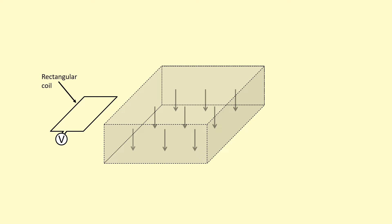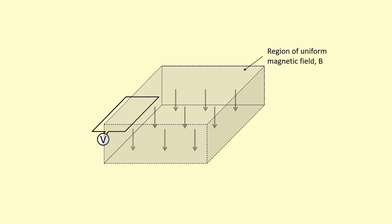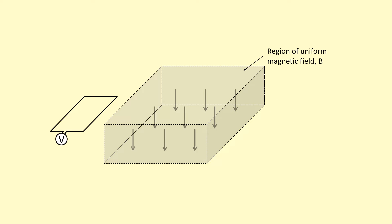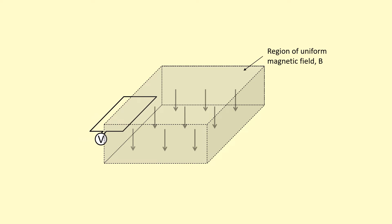In this example we have a rectangular coil attached to a voltmeter, and we've got a region of uniform magnetic field. We're going to let the rectangular coil pass through into the field and then leave the field. Initially the coil is outside the field and it's going to start moving towards the field, but there's no reading because there's no increase in flux until it starts to enter the field.